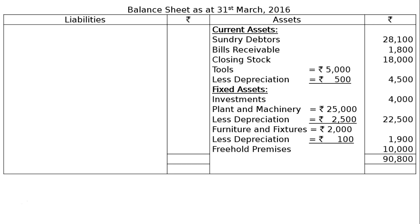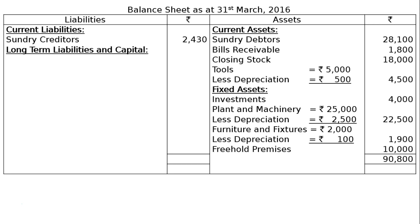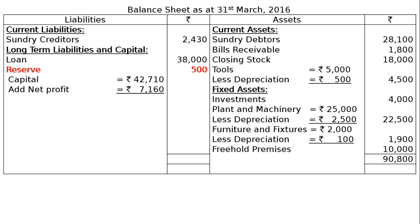The total of the asset side is Rs 90,800. On the liability side: current liabilities — sundry creditors Rs 2,430. Long-term liabilities and capital: loan Rs 38,000, capital Rs 42,710, add net profit Rs 7,760, giving Rs 49,870 in the final column. The total of the liability side is Rs 90,800, which is the final answer confirming the balance sheet balances.